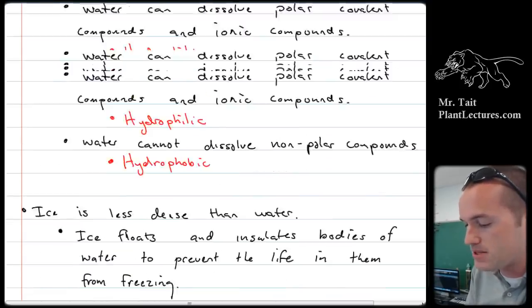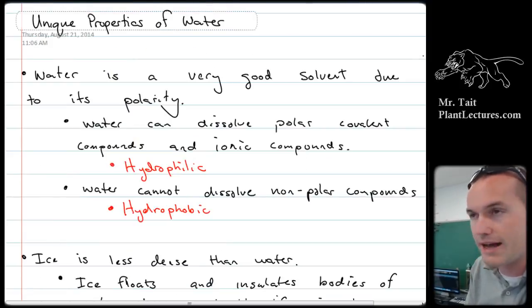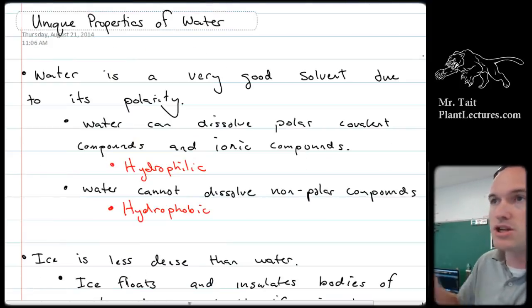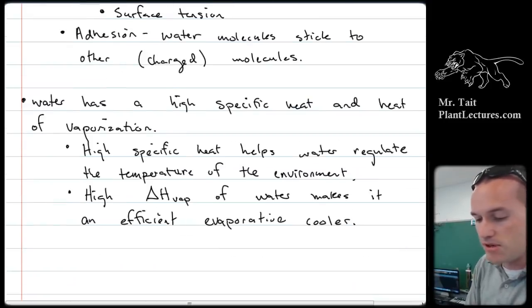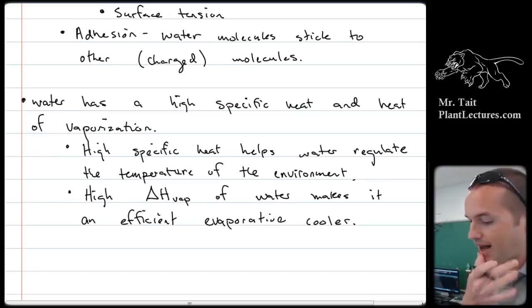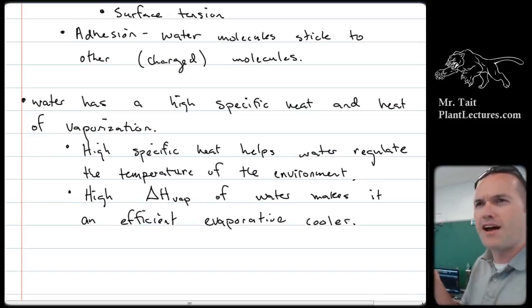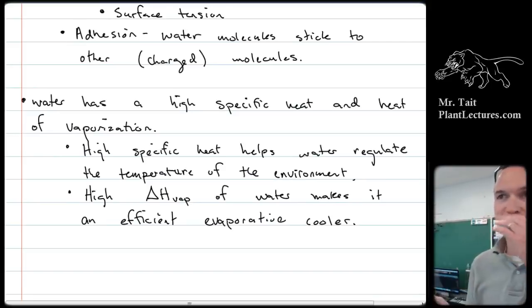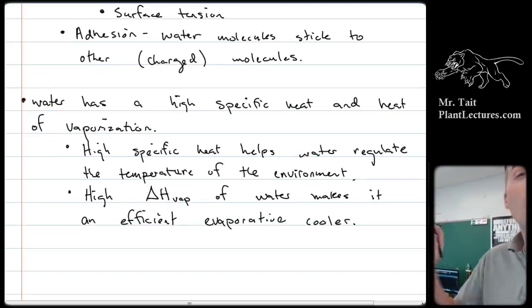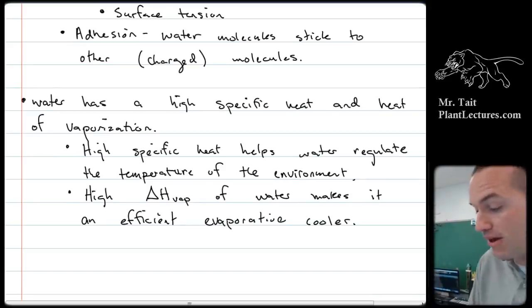This leads to all the unique properties of water, which are adhesion, cohesion, the fact that water is a really good solvent, also the fact that water has a high specific heat and a high vaporization, and then the fact that ice is less dense than water. Those are all really important unique factors of water that are caused by the fact that it has hydrogen bonding, which is caused by its polarity.